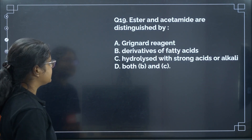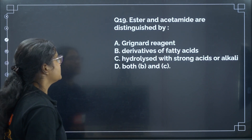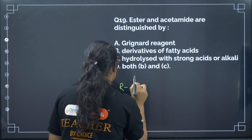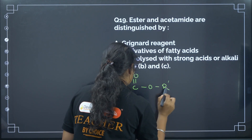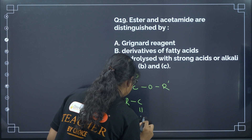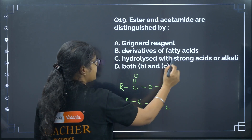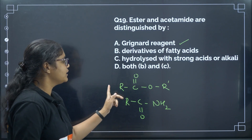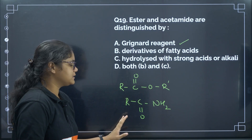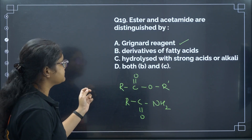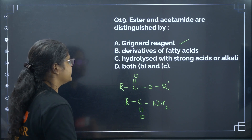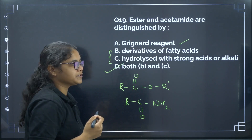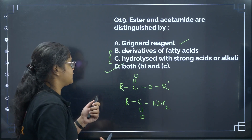Next: esters and acetamide are distinguished by? Grignard reagent reacts with both. However, esters are derivatives of fatty acids while acetamide is not. Esters can be hydrolyzed with strong acids or alkalis to give acid and alcohol. These two properties — being a derivative of fatty acids and hydrolysis with strong acids or alkalis — distinguish esters from acetamide. Correct answer: options B and C.